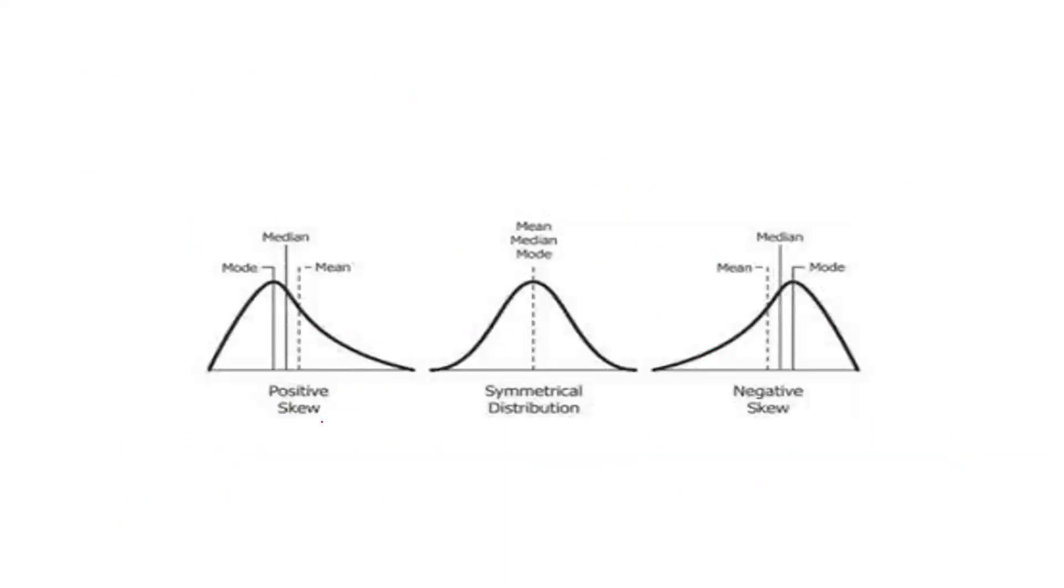So, one by one we will understand positive skewness. You can see I had showed other also positive. You can see mean value would be at the lowest side then median and then mode, that is positive. Symmetric means mean equal to median, median equal to mode, all are equal, that is zero. That means we can call it skewness that is normally distributed data.